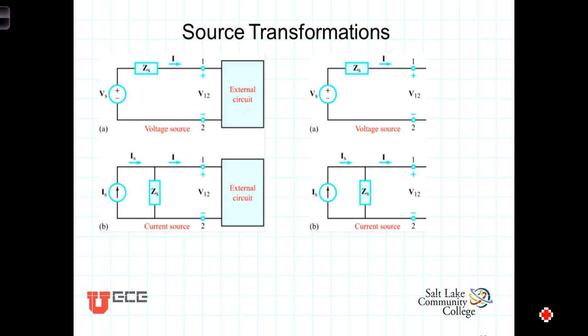By review, what we mean when we say two circuits are equivalent is they have, in this case, the same terminal characteristics. And by that we mean that an external circuit connected to a voltage source with a series impedance will experience the same voltage and current as that same external circuit would experience if it were connected to a parallel current source connected in parallel with an impedance.